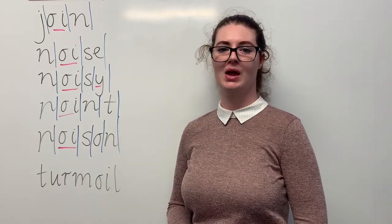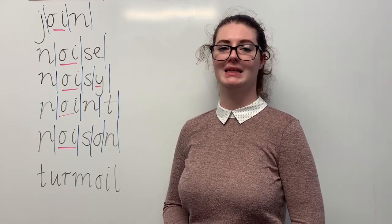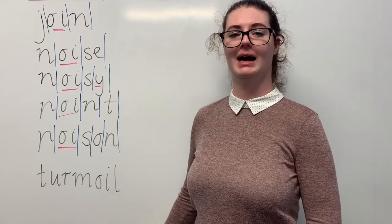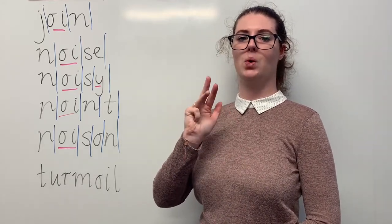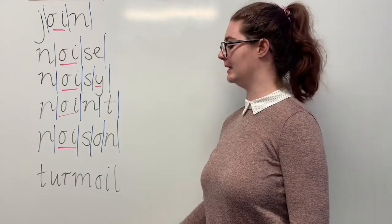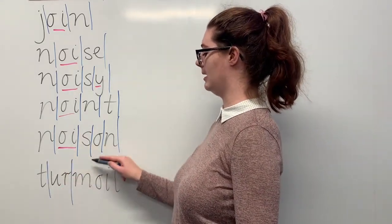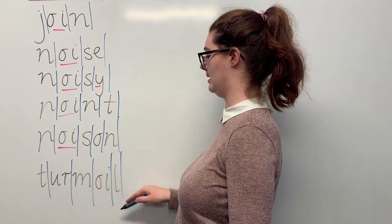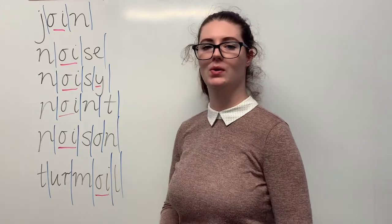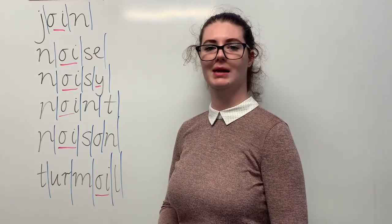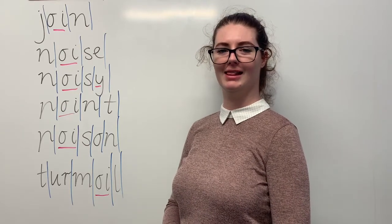Our next word is turmoil. Say turmoil. When a country is in war, it is in turmoil. The sounds in turmoil are, together, t, ur, m, oi, l. The letters in turmoil are t, u, r, m, o, i, l. The part we need to remember is the oi digraph making the oi sound. Can you teach it to me? Turmoil: t, u, r, m, o, i, l.